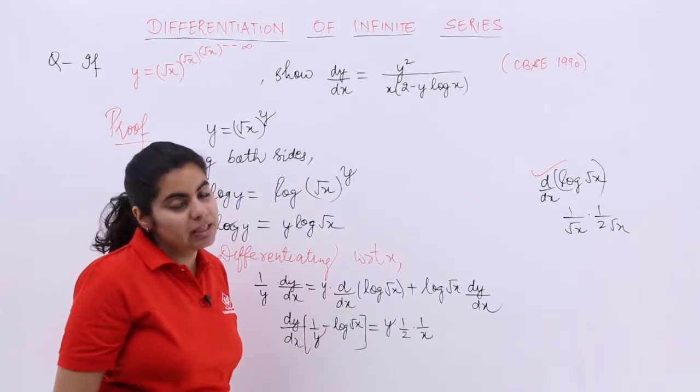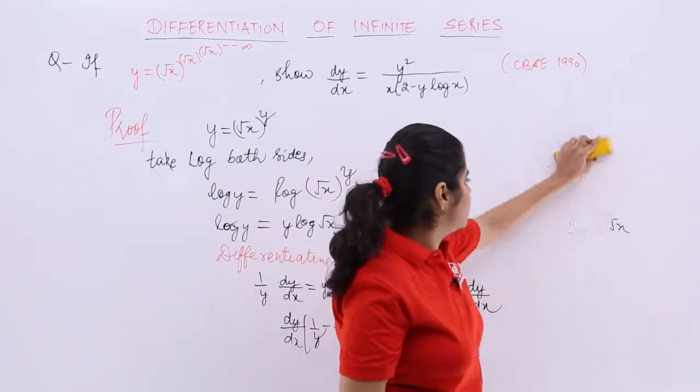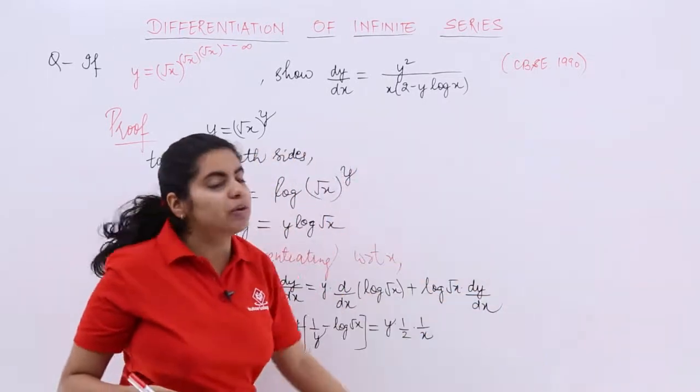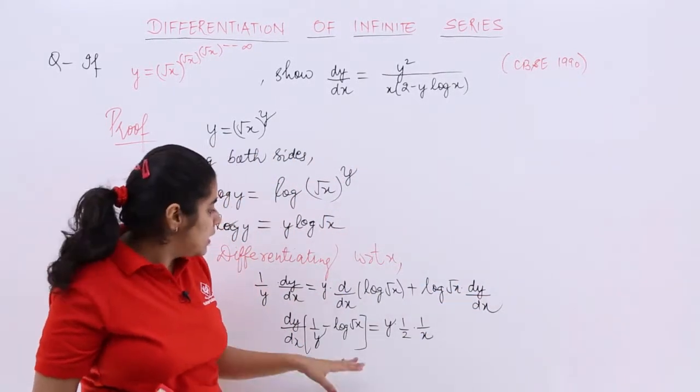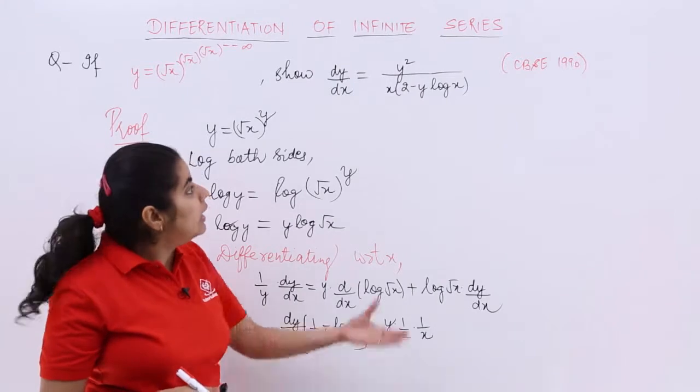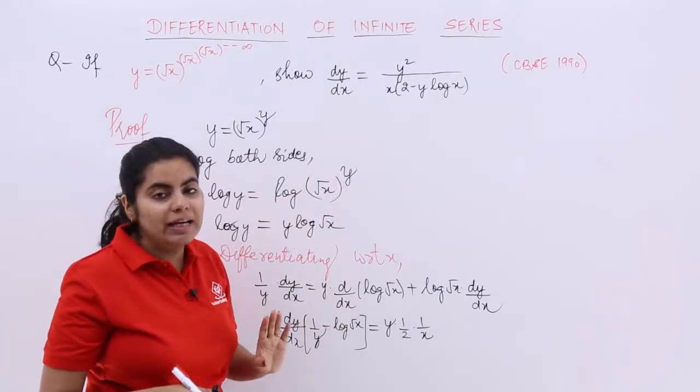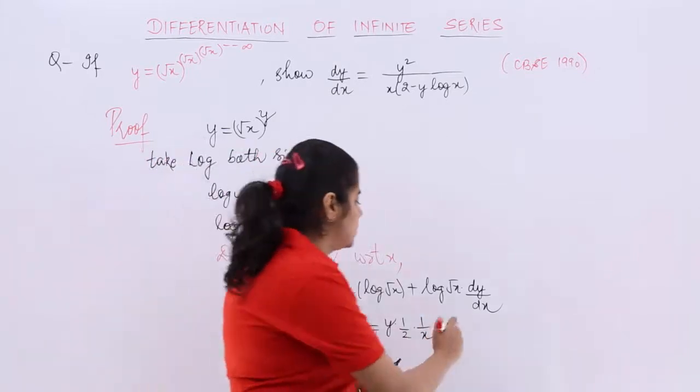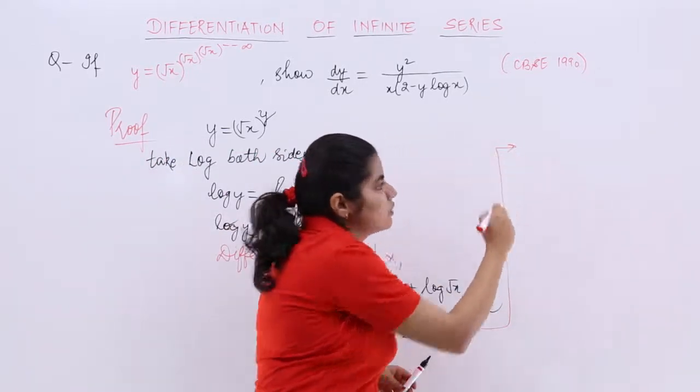I am erasing it for creating some space, making some space for the further part of the solution. Now, it is something like this. Ultimately, we have to prove dy by dx equal to something. So we have to actually make some changes. Let's make some changes there. So I shift the rest of the solution here.